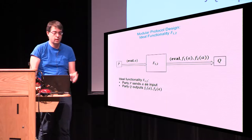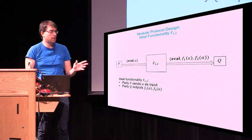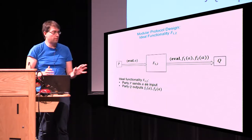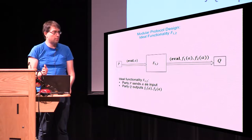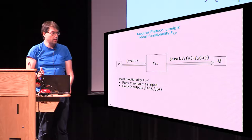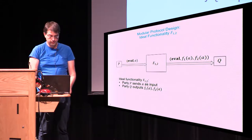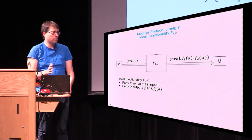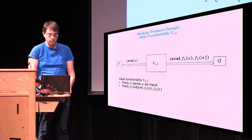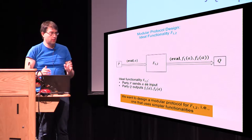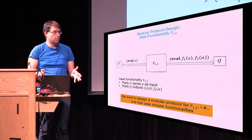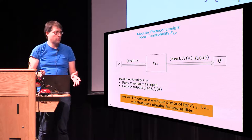Let's look at this through a simple example. Consider a complex functionality F12 which does the following: a party P sends an input A, the functionality evaluates functions F1 and F2 on that input, and finally sends the result to party Q. We want to provide a modular protocol to realize this functionality.